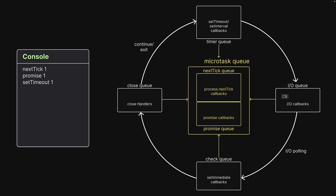The loop then proceeds to the second iteration. It checks the next tick queue, promise queue, timer queue — all of which are empty — and finally arrives at the IO queue. It encounters one new callback function which gets executed, and the fourth message is logged to the console. But the callback function also contains a call to setImmediate, which queues up a callback function in the check queue. The event loop then proceeds from the IO queue into the check queue, dequeues the callback, and executes it. This results in the last message being logged in the console.